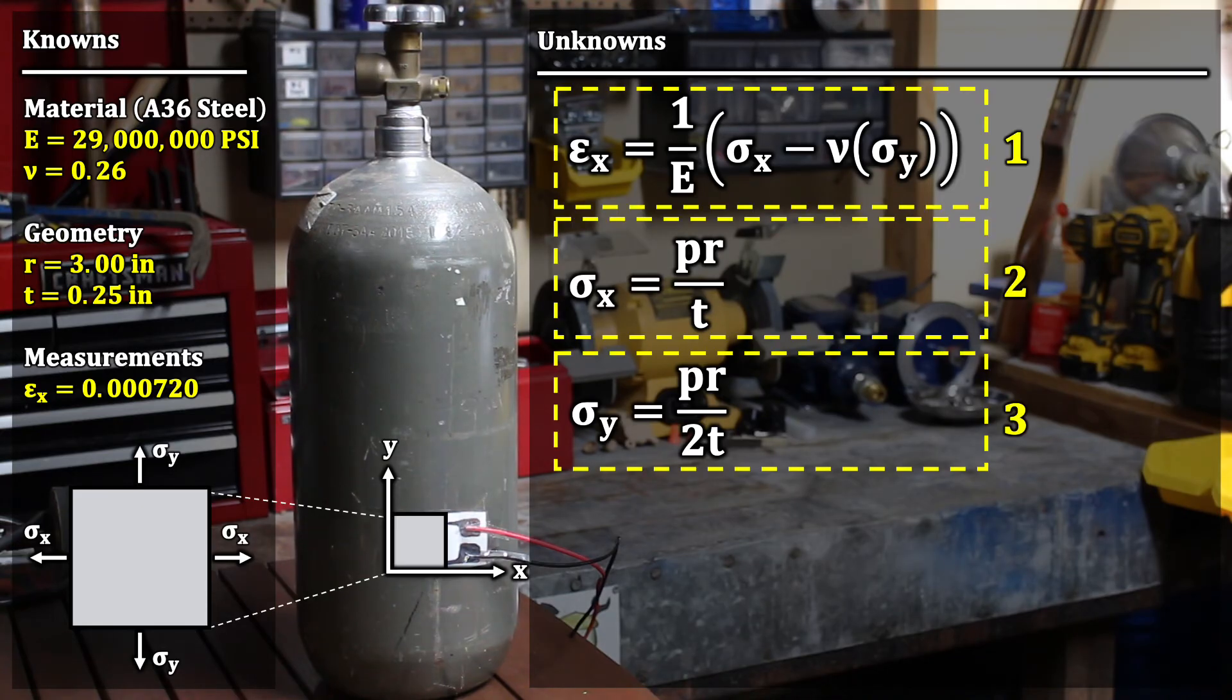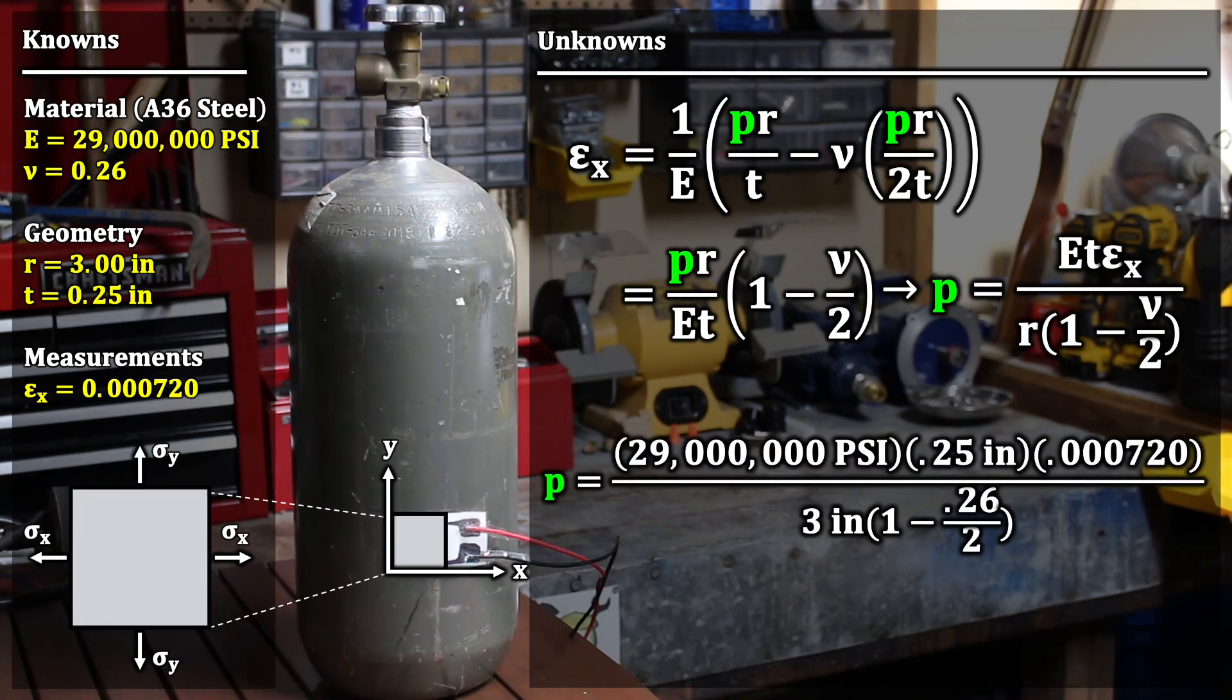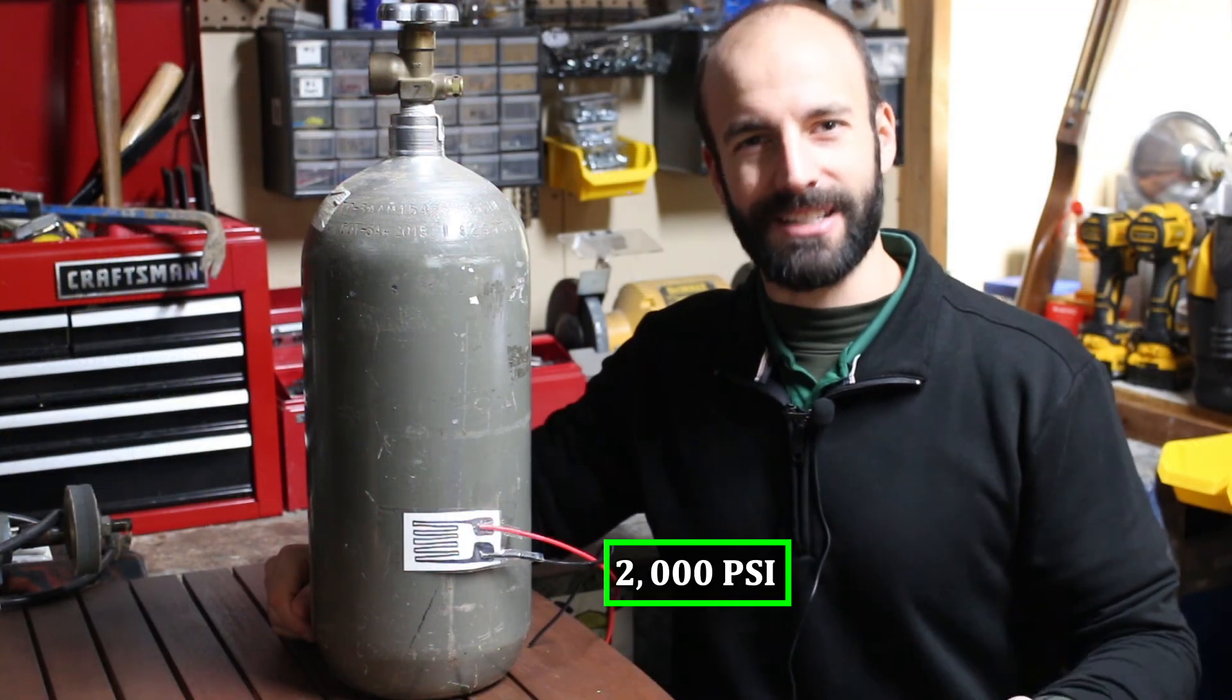And now we have three equations and three unknowns. We can plug in sigma sub x and sigma sub y, our normal stress in the x-direction and our normal stress in the y-direction, into our normal strain in the x-direction equation, reduce it, and plug in our known values, and we end up getting that our pressure is 2,000 psi.